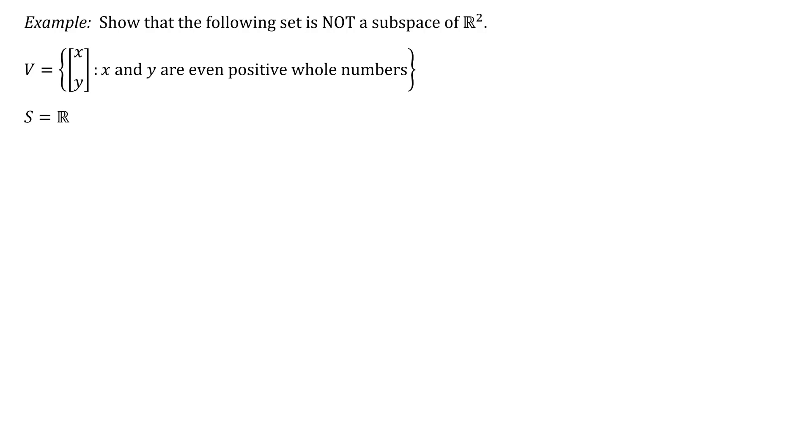So we want to first of all make sure that we're clear about what we're looking at here. Our set is a set of vectors, so we can think about those as two by one matrices or we could also perhaps think of those a little bit geometrically like a vector xi plus yj, but the condition here is that x and y are even positive whole numbers.